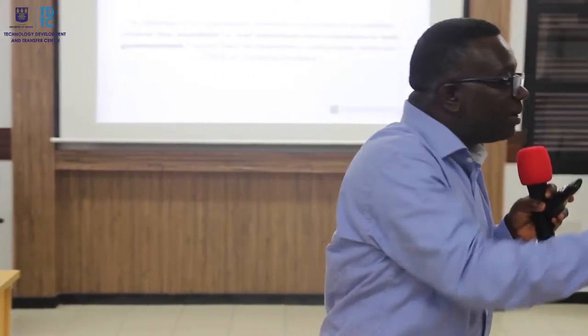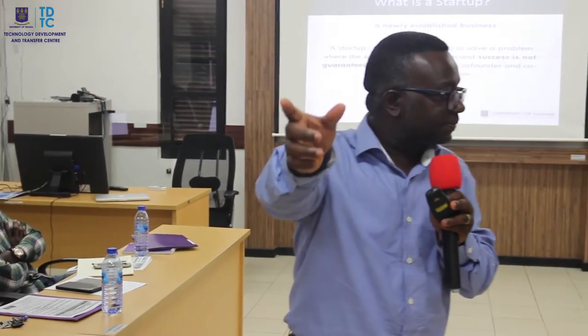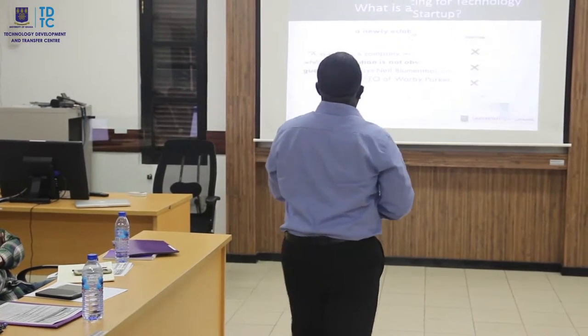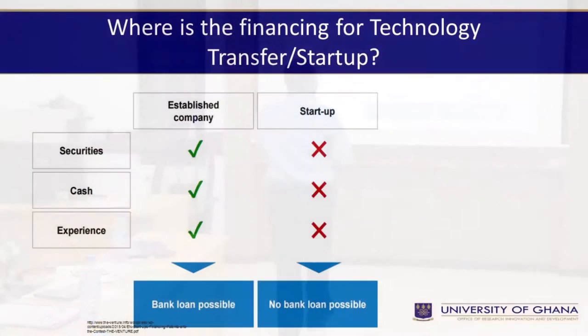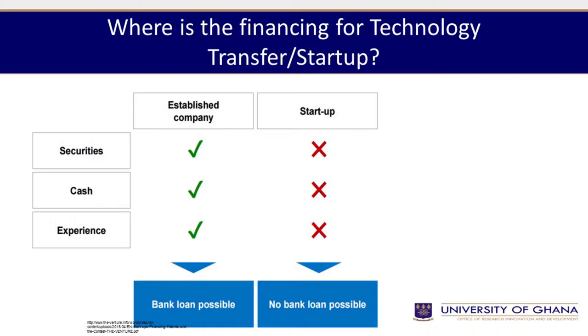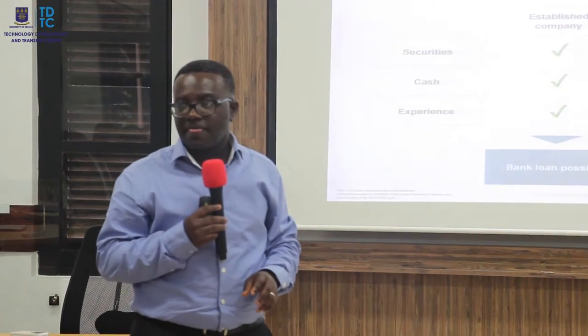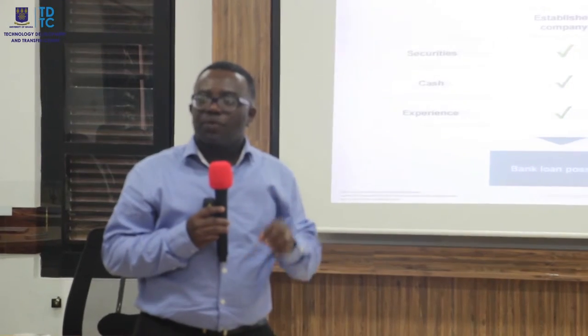It's not every time that we develop a product and it's finished — it's about how we turn it into a form that can be appreciated by the market. The challenge is that an established company can get securities, cash, and experience to get a bank loan. A startup has nothing to assure the lender, which is why we have to find a way of generating a fund within the university to sponsor such activities.